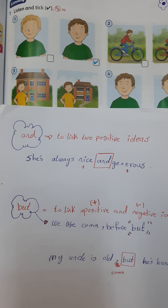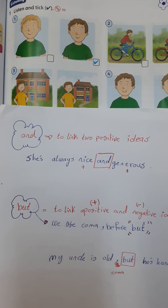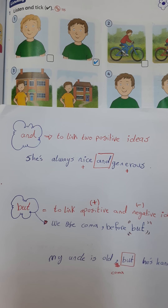First of all, you have 'and.' The meaning of 'and' in Arabic is 'wa.' We use 'and' to link two positive ideas — to connect two positive ideas together. Positive means there is no negation in the sentence.